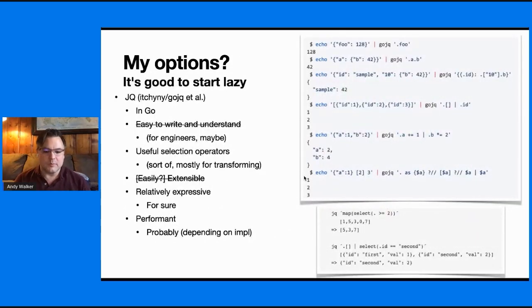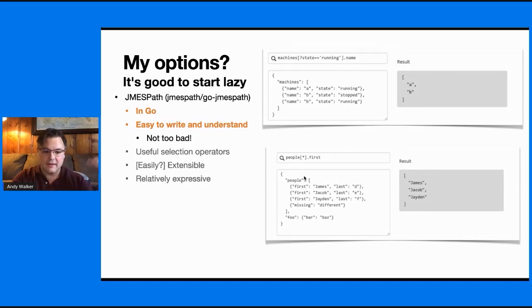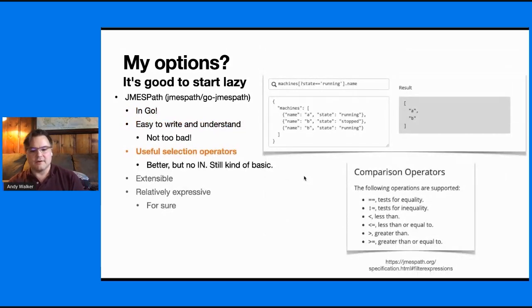So my options, it's good to start lazy. What can we do? Well, there's JQ and there is a Go implementation of that, but it's not exactly easy to write and understand. I don't think that most people who are even semi-technical would be able to look at JQ and be like, oh yeah, that's intuitive. JMSPath is in Go, it is easy to write and understand. Not too bad looking good. Selection operators, it's better. There's no 'in', right?